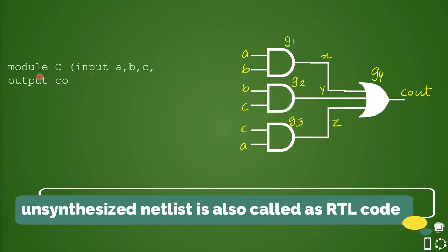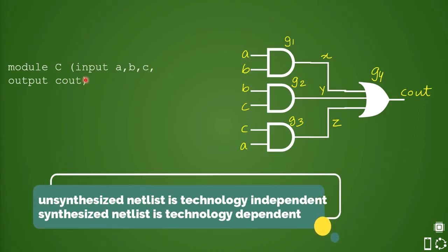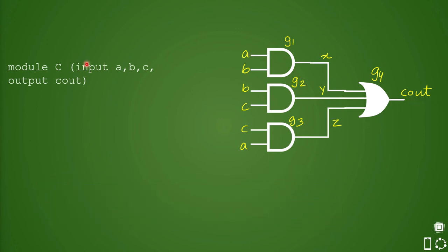First it will be defining the module. This module has input and output pins. So it will define this module where it will say that these are the inputs a, b, and c, and one output c_out. Once the pins are defined, then it will define the connectivity information. There are three wires which are being used: wire x, y, and z.